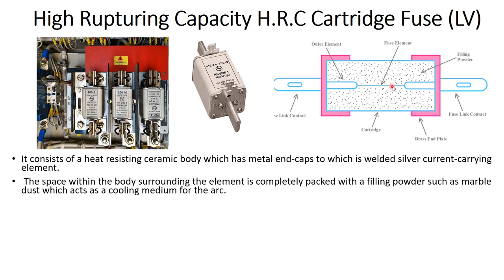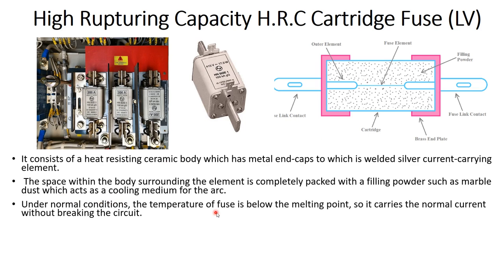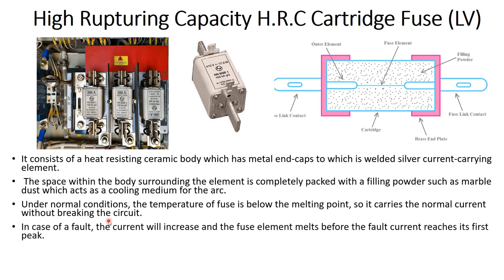When the fuse element melts, an arc forms between the two contacts due to breakdown of air. The powder acts as a cooling medium to prevent the occurrence of fire. Under normal conditions the fuse carries normal current without breaking the circuit. However, in a fault condition the current rises very high and the fuse element starts melting before the fault current reaches its first peak.